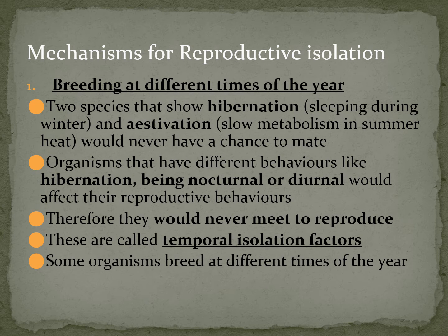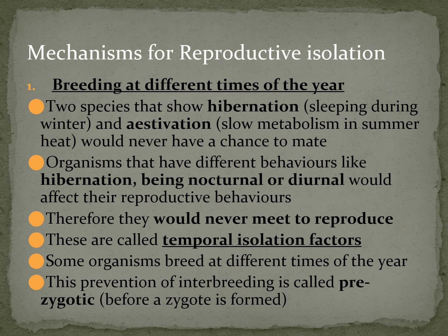Some organisms also breed at different times of year — perhaps nothing to do with day or night activity, but rather one species breeds in summer months whereas another breeds in autumn. If your fertility does not overlap within a species, you won't be able to breed with one another — if the female part of the population is not fertile during that time of year, you can't breed. This creates a barrier preventing interbreeding, also known as prezygotic reproductive isolation, preventing any zygote from being formed because no reproduction can take place at all.